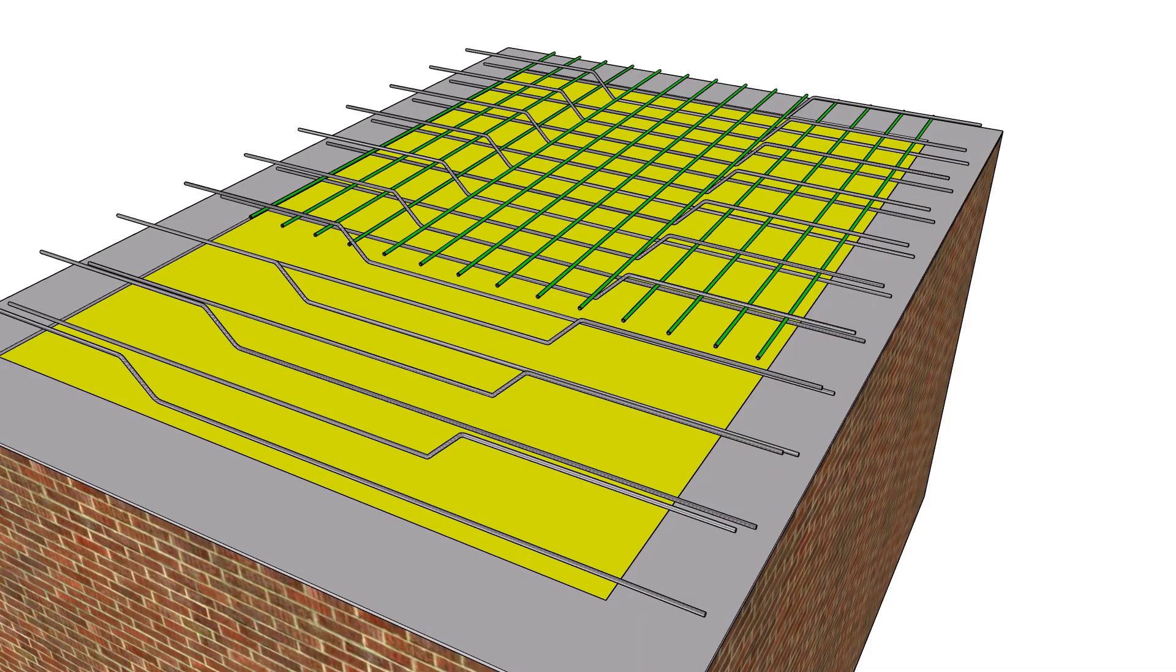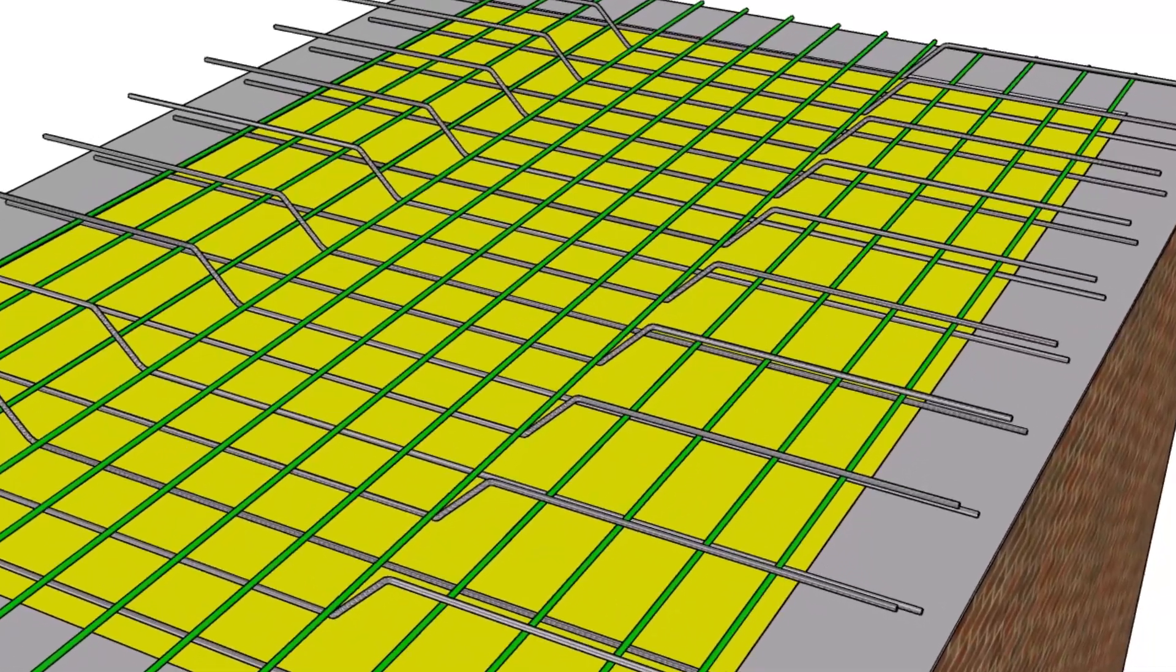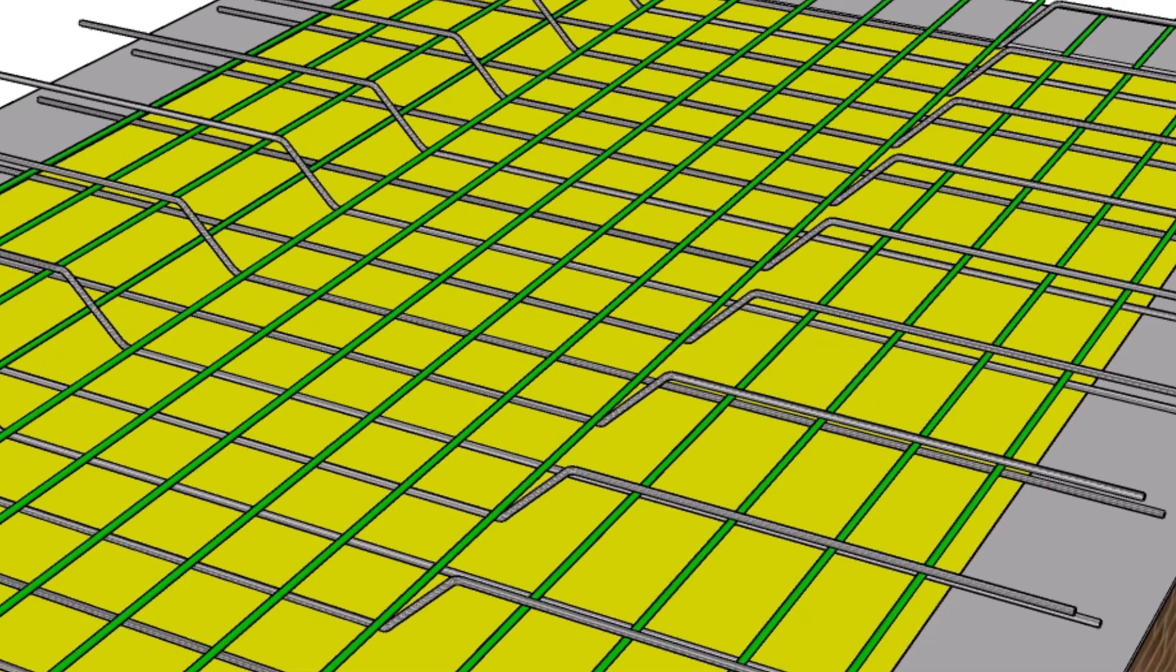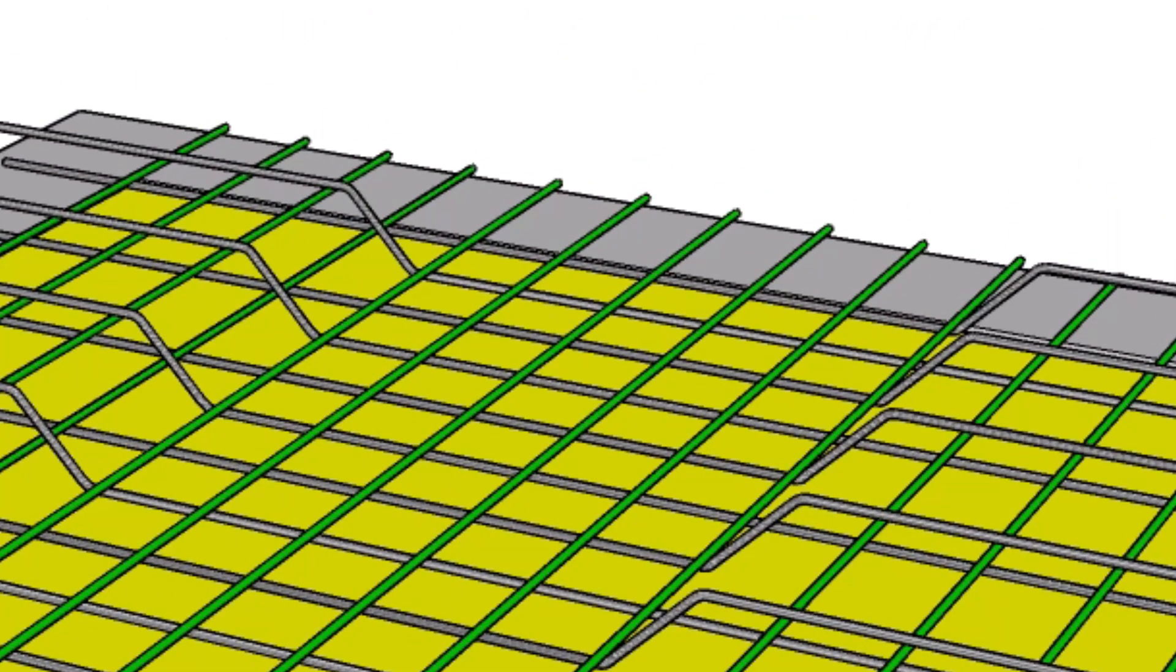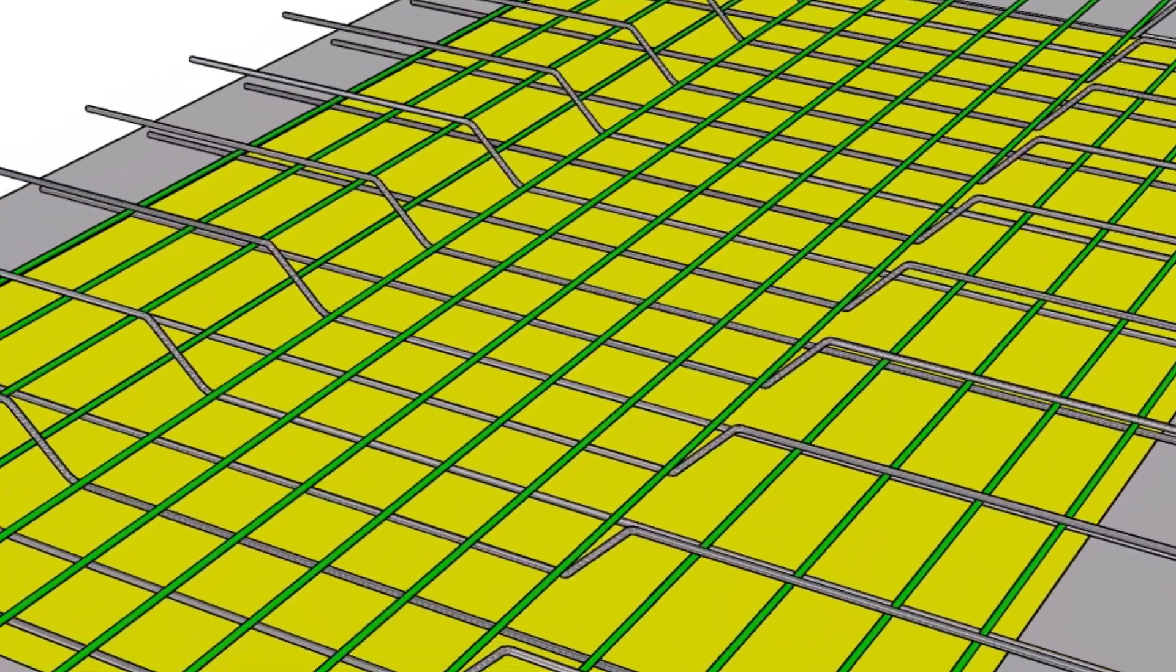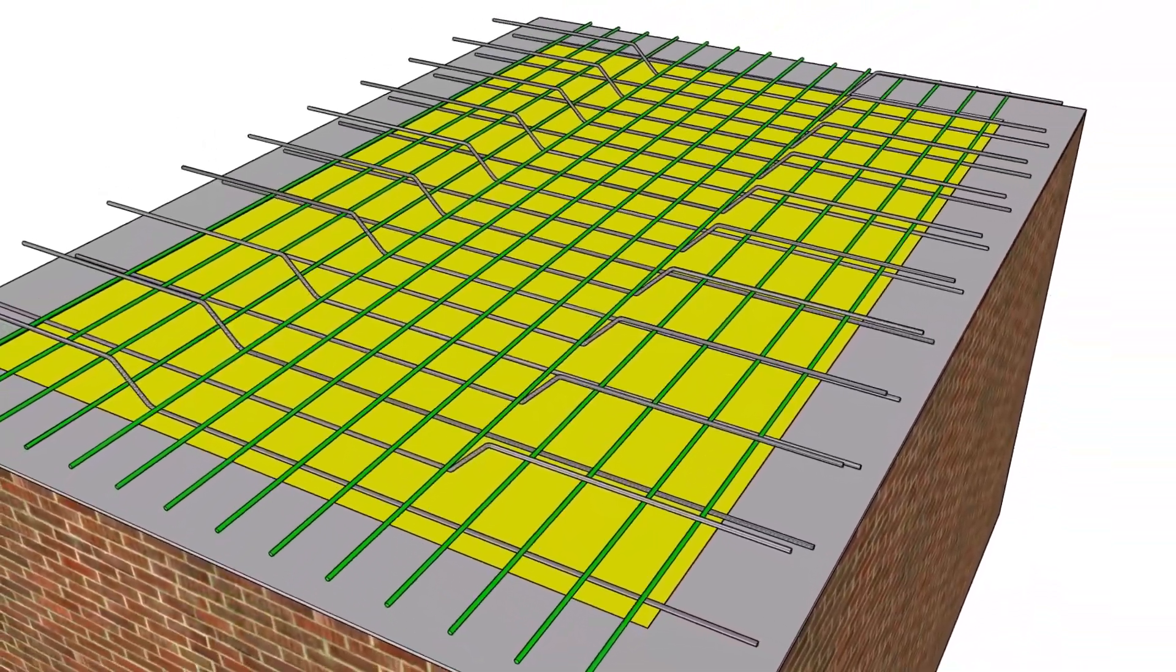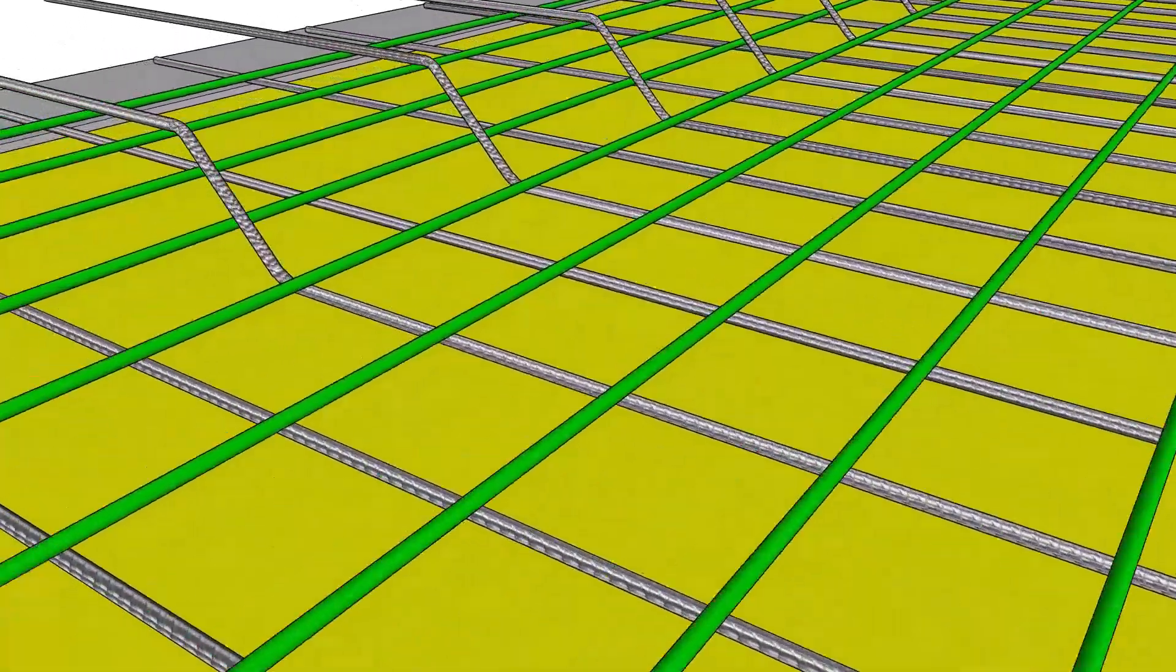Now, let's discuss about the distribution bars. The bars in longer direction of the slab are called distribution bars or transverse steel. These assist in distribution of the stresses caused by the superimposed loading, temperature changes, and shrinkage during the hardening process. These bars are placed in the upper layer and tied with the main steel bars to keep them in correct position during concreting.